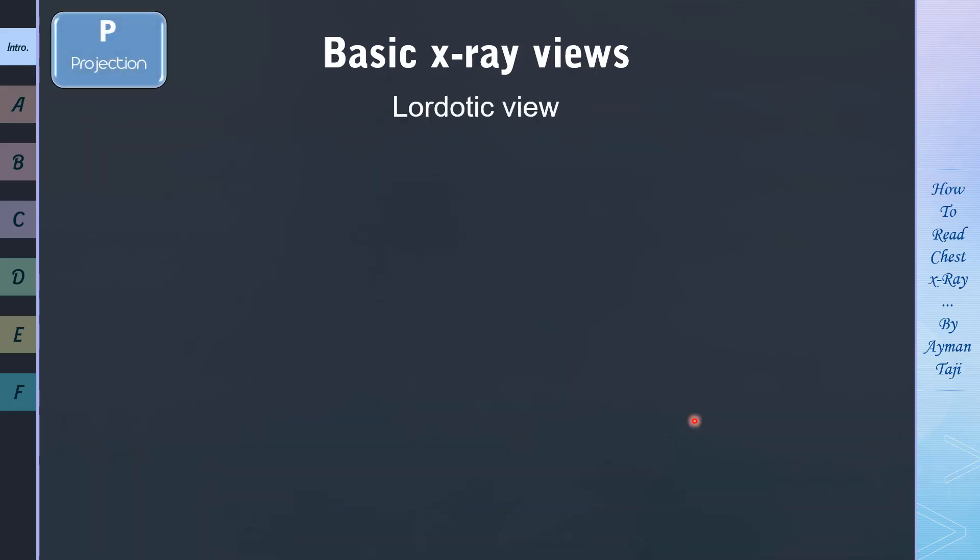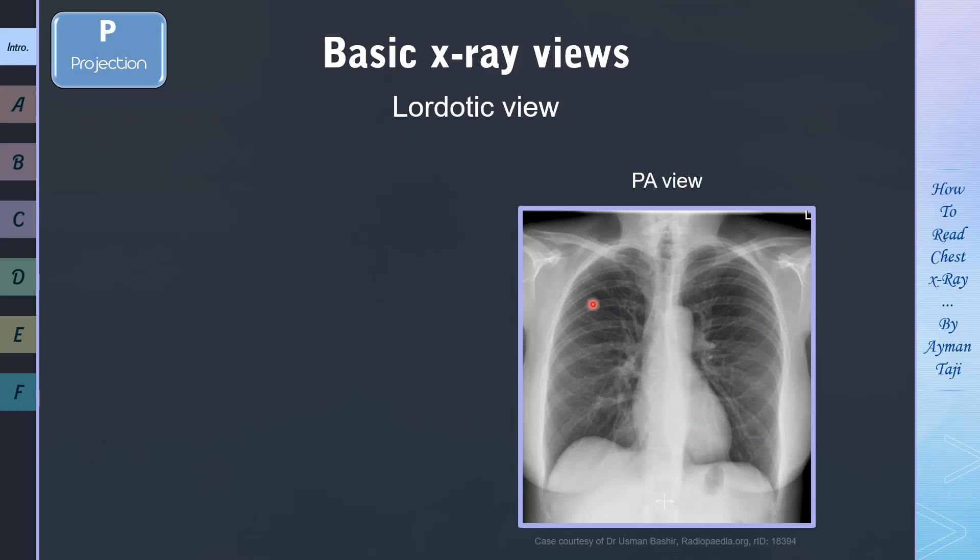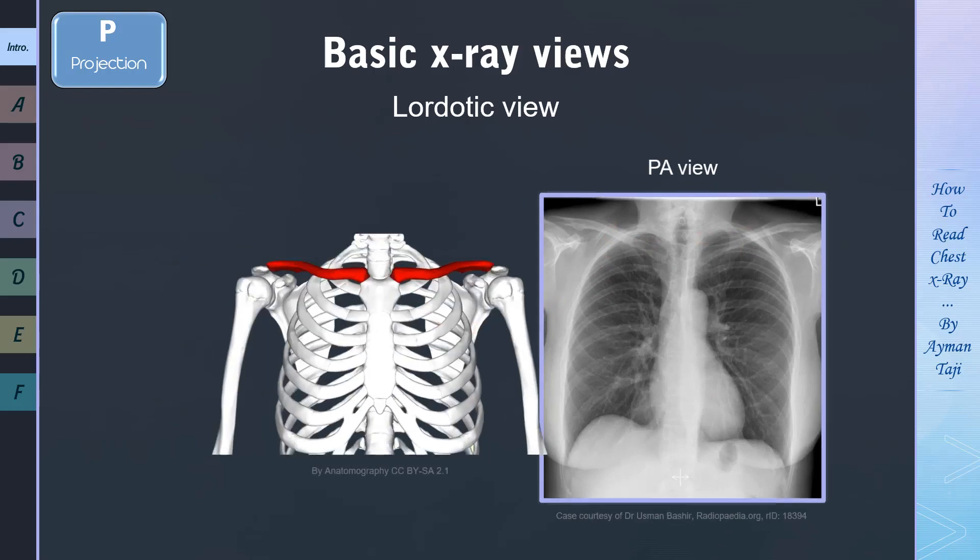And the fifth view we'll talk about is called lordotic view. But to understand why we need this view, take a look at usual PA view. You can see that apices of the lung aren't fully clear because of the clavicles or collar bones which are this bone in red right here. To overcome this problem, when the anatomy of interest is the lung apices, to pick up abnormalities such as Pancoast tumor,